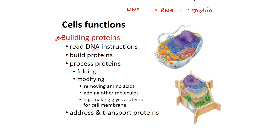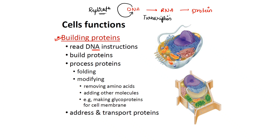The central dogma tells us: DNA replicates itself — we call that replication. When DNA is converted to RNA, we call that transcription. When the RNA is used to make protein, we call that translation.